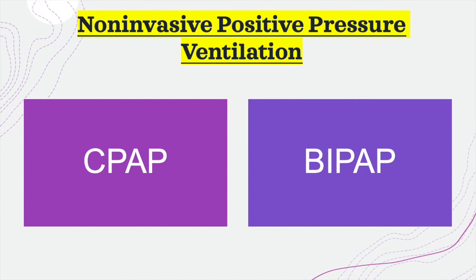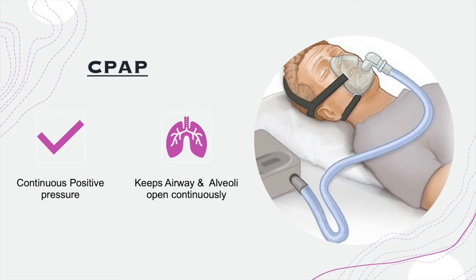Next we move to non-invasive positive pressure ventilation, which consists of CPAP and BiPAP. CPAP stands for continuous positive airway pressure — it delivers positive pressure continuously, keeping the airway open. CPAP is commonly used for patients with obstructive sleep apnea (OSA), where throat muscles and the tongue relax and block the airway. The CPAP continuously maintains positive airway pressure, preventing that obstruction.